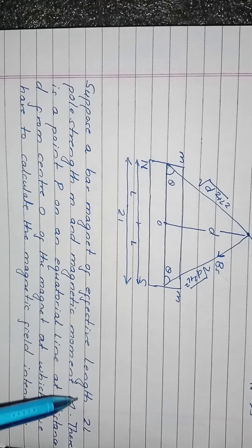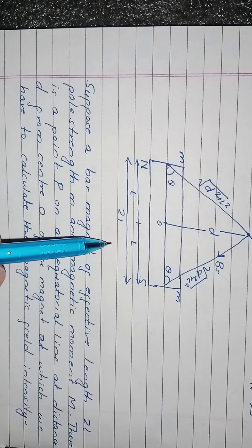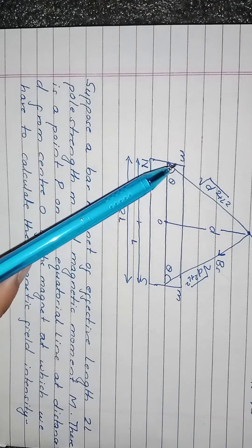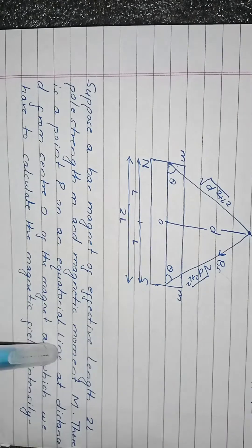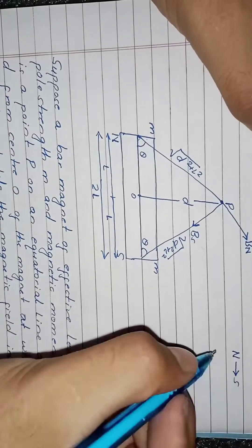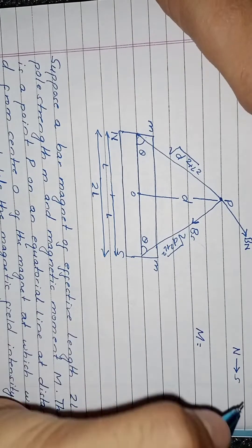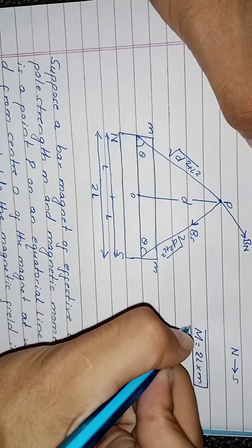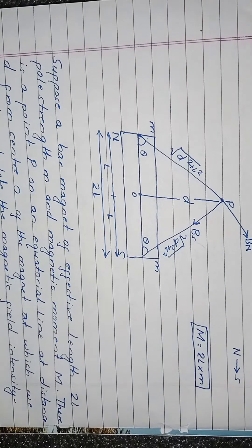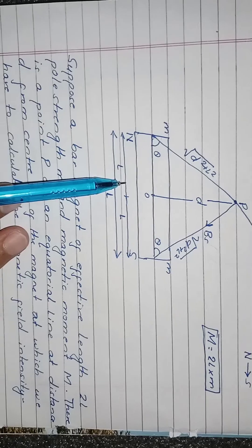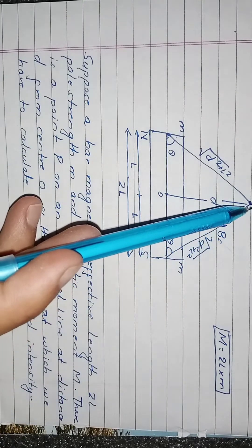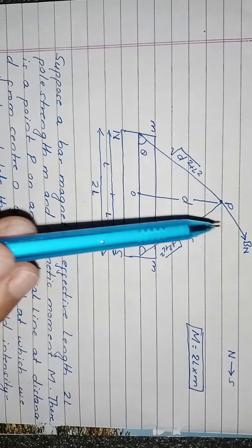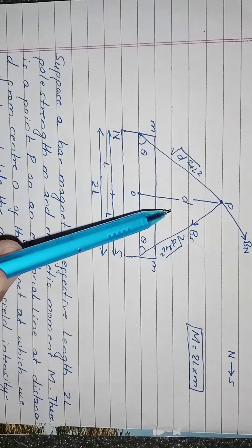Suppose the bar magnet has effective length 2L and pole strength M, so the magnetic moment is M. There is a point P on the equatorial line at distance d from the center of the magnet.